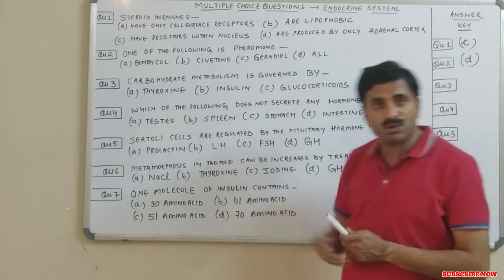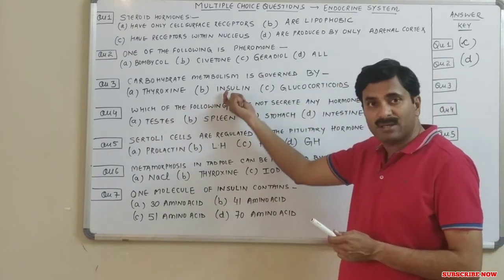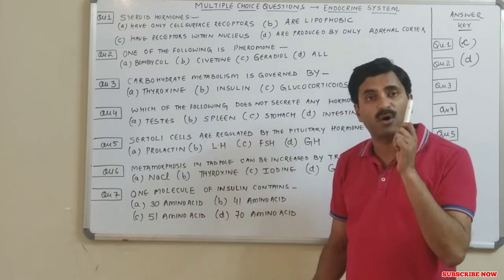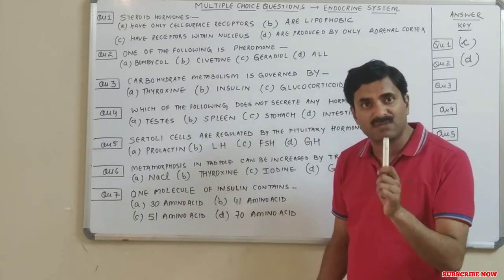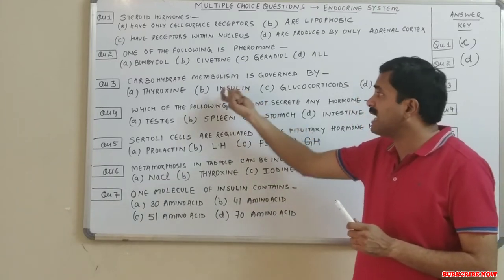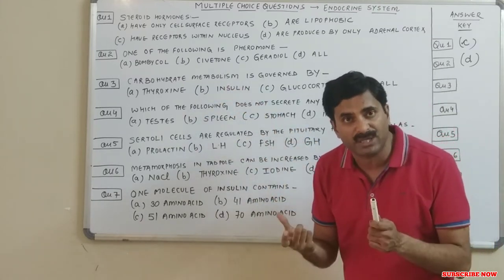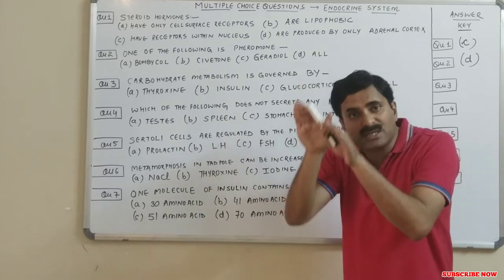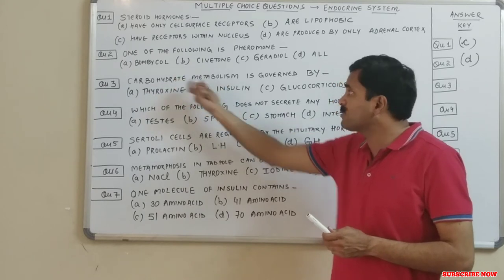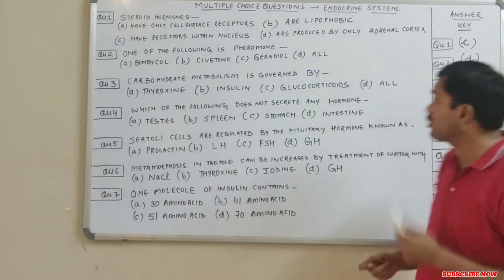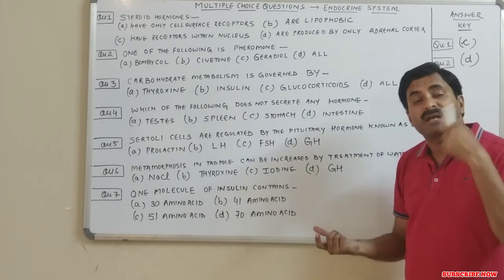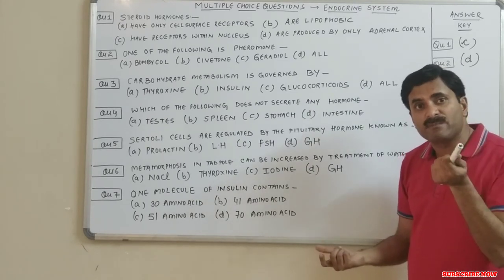Insulin is secreted by the beta cells of the islets of Langerhans in the pancreas. Insulin regulates sugar in the body — it reduces blood sugar levels. Since sugar is a carbohydrate, insulin is also associated with carbohydrate metabolism.